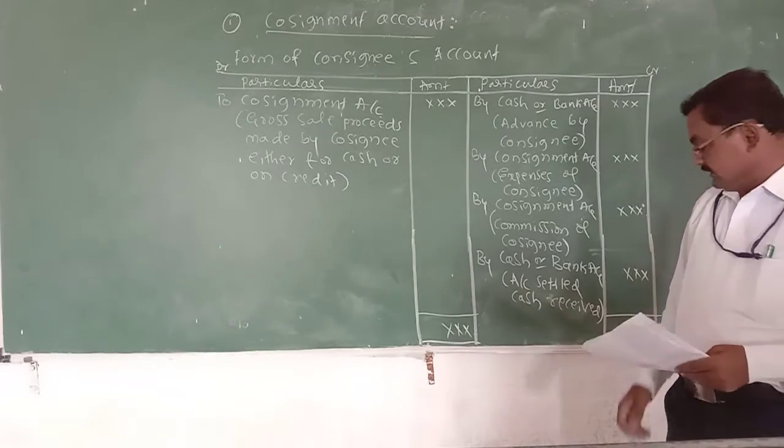The third account is the consignee's account. This is a personal account that shows the balance amount due to the consignee or by the consignee - how much cash or bank is settled in at the end, the balancing figure.